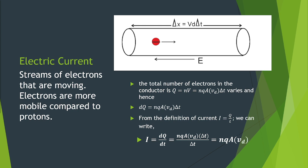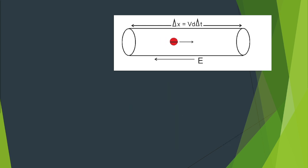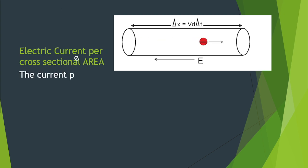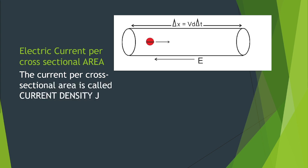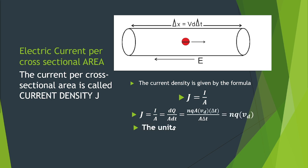We can try to find the electric current per cross-sectional area. The current per cross-sectional area is called current density J. It has a formula, current density J is equal to I over A. We will see that current density J is equal to N times Q times the drift velocity V sub D. The units for the current density J is equal to amperes per square meter.